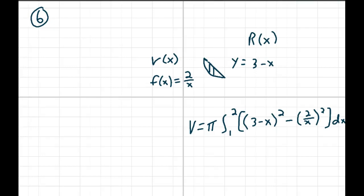Number six. If we graph y equals 3 minus x and f of x equals 2 over x, we find out that 3 minus x is just a little taller than 2 over x. So that's going to be related to 3 minus x, and little r of x will be related to 2 over x.